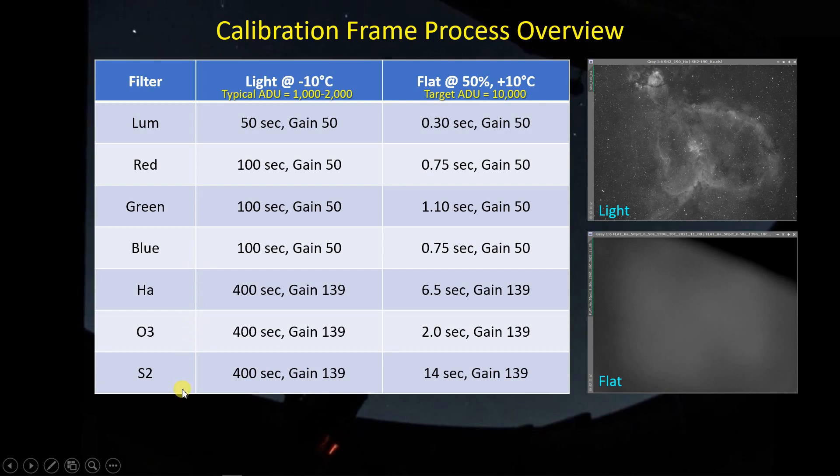I have the seven filters that I typically use. Luminance, red, green, blue, and then the SHO combination. I cool the camera down to a minus 10 degrees C when I'm taking light frames.